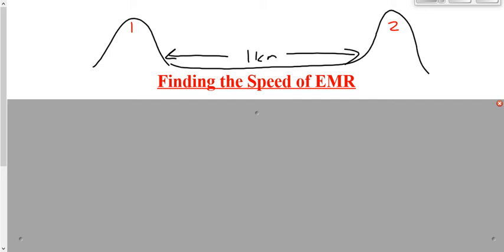So he takes some kind of crude timing mechanism — I don't know what he would have used to time this — and measures the time that it takes the light to travel that two-kilometer round trip. Then he says, all I have to do is divide the distance by the time, the two kilometers by the time that it took the light to travel that two kilometers, and I get the speed of light.